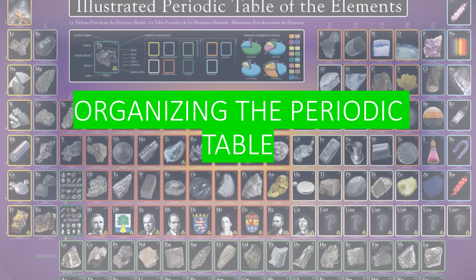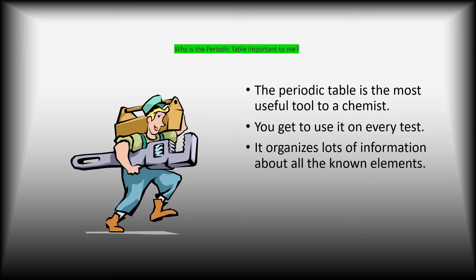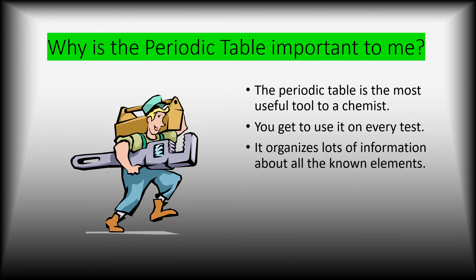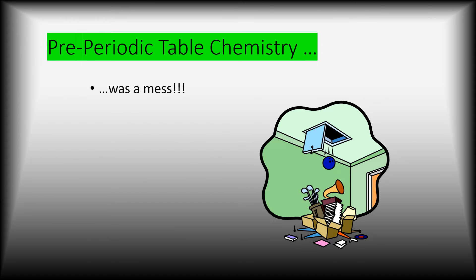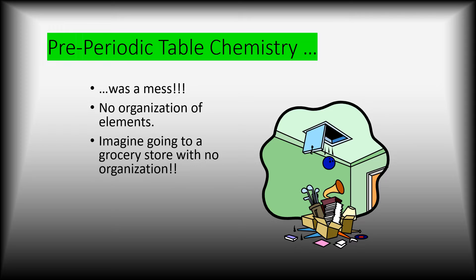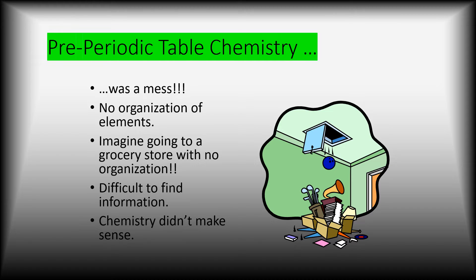Make sure you're taking good notes — there's going to be a quiz at the end. The question is, why is the periodic table important to you? It's really the most useful tool we have in a chemistry class. You'll use it on every test. It organizes lots of information about all the known elements. Pre-periodic table chemistry was a huge mess — there was no organization of the elements. It's like going into the grocery store with no organization — you find some cheese beside the celery and beside that is some hamburger. There was no way to organize all of these elements that had been found, and therefore it was really hard to find any relationships between them. Chemistry really didn't make a lot of sense before.